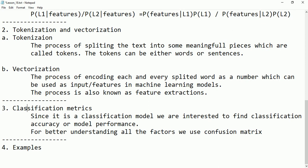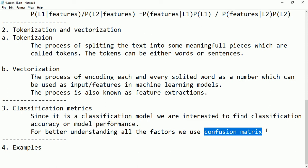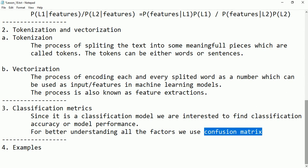Since Naive Bayes is a classification model, we have to apply the classification matrix. We calculate the model performance using classification accuracy. For better understanding of different error types — type 1, type 2, true positive, true negative, false positive, false negative, precision, sensitivity — we use the confusion matrix to calculate all those metrics.